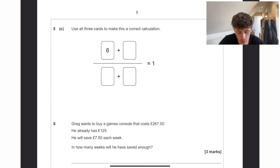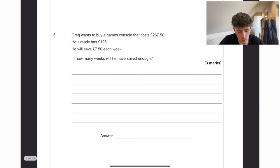Use all three cards to make this a correct calculation. 6 plus 5 and then 8 plus 3. 11 over 11 is going to be 1.